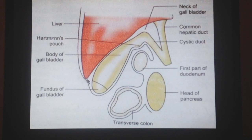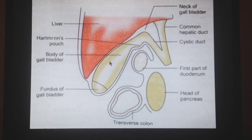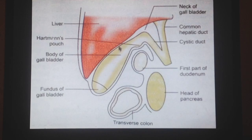Anterior to the fundus is the abdominal wall, whereas posterior to it is the transverse colon. The body is covered by the peritoneum, but anteriorly the liver is present and posteriorly is the first part of the duodenum. The neck is narrow and becomes continuous with the cystic duct. This neck is attached to the liver by areolar tissue.